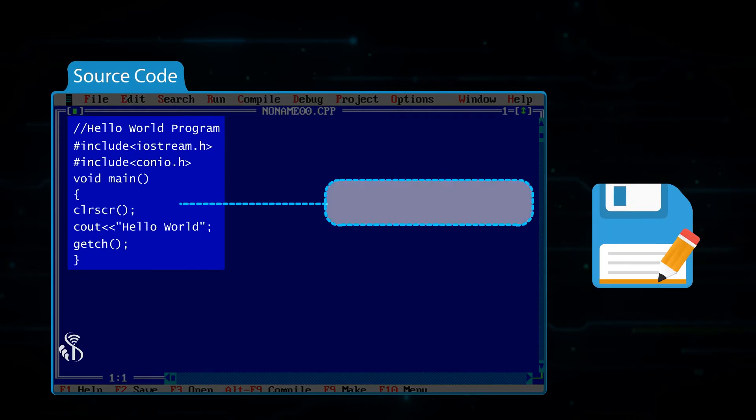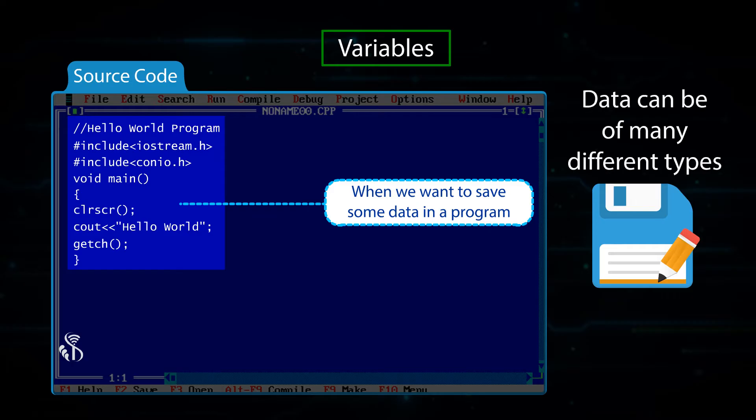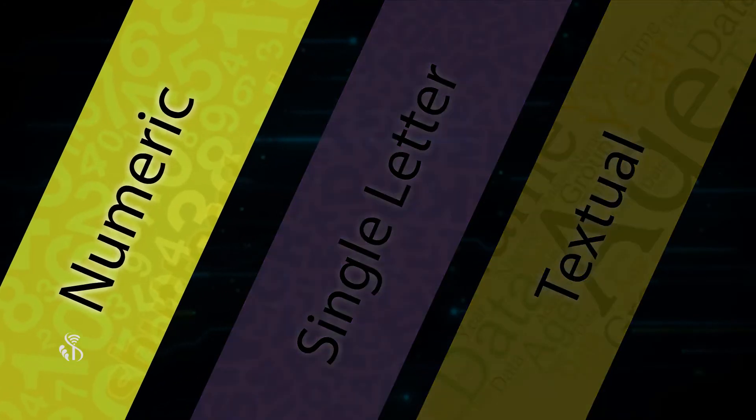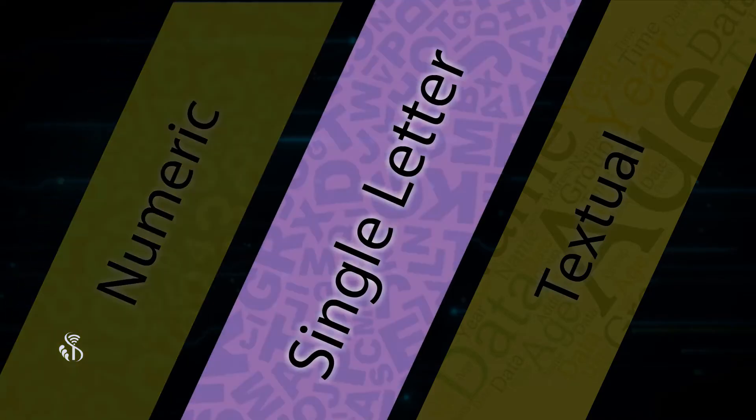When we want to save some data in a program, we use variables. This data can be of many different types. It can be numeric, like age.